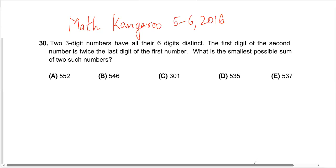Let's read the question. Two three-digit numbers have all their six digits distinct. Distinct means all digits are different. The first digit of the second number is twice the last digit of the first number. What is the smallest possible sum of two such numbers?